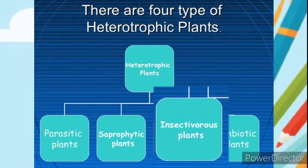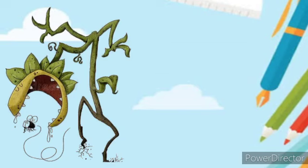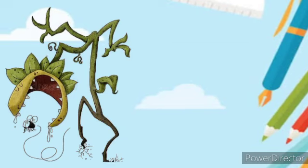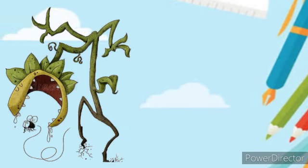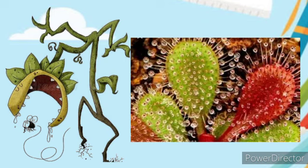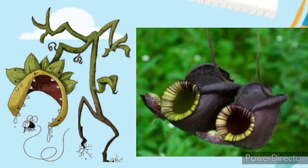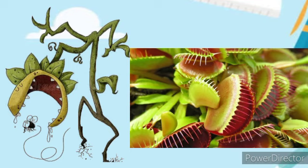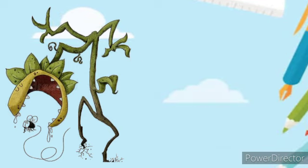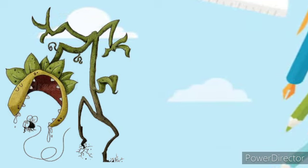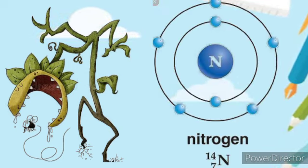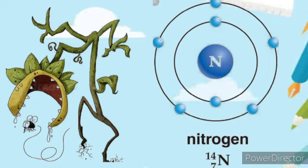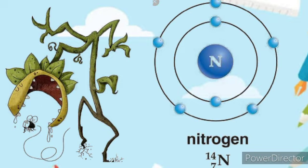Insectivorous plants are those that derive some or most of their nutrients by trapping and consuming animals, mainly insects. They can also be called insect-eating plants. These plants mostly grow in places where the soil is deficient in certain nutrients, particularly nitrogen.